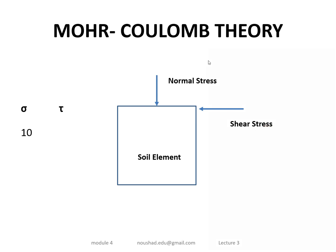If the normal stress is 10 kN/m², you get a corresponding shear stress value. For example, if normal stress is 10, the shear stress at failure is 50 kN/m². Similarly, if the normal stress is 30 kN/m², the corresponding shear stress value at failure is 8 kN/m².